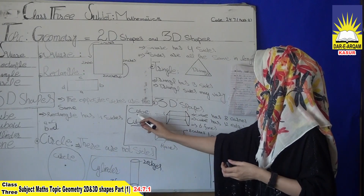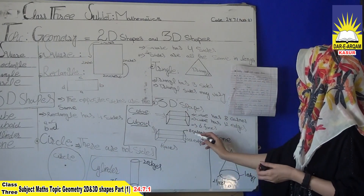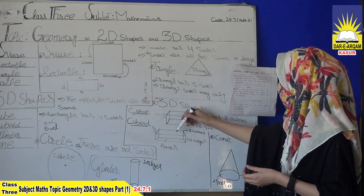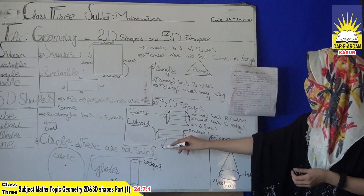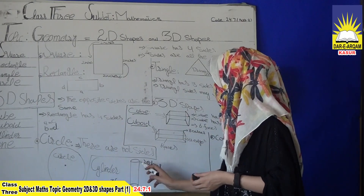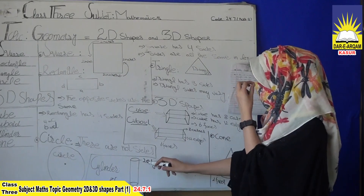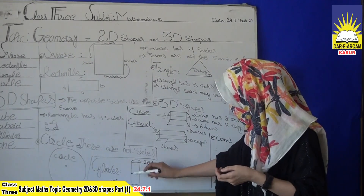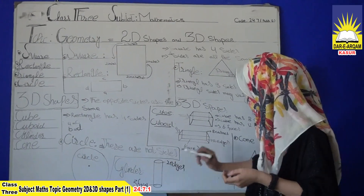Next we have a cuboid. A cuboid also has 8 corners, 12 edges, and 6 faces. Next we have a cylinder. A cylinder has 2 edges and 3 faces: 1, 2, and 3.